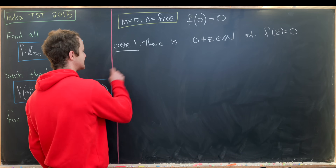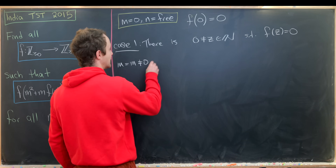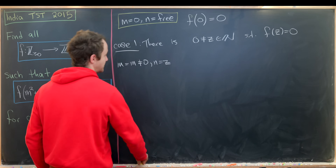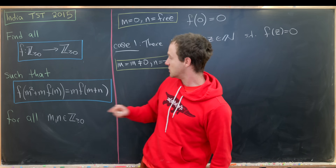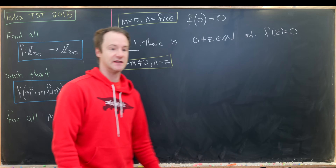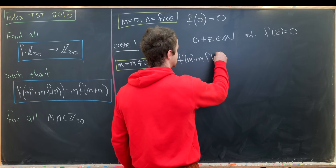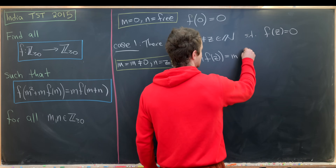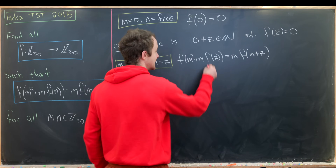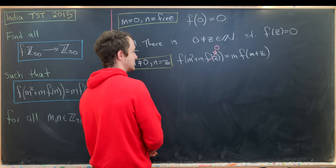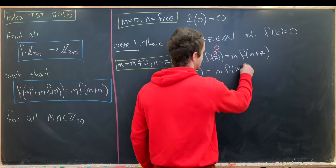Let's cover case one first. We'll set m free and n equal to z. That gives us f(m² + m·f(z)) = m·f(m + z). We can simplify using the fact that f(z) = 0 by our assumption, and that gives us f(m²) = m·f(m + z).